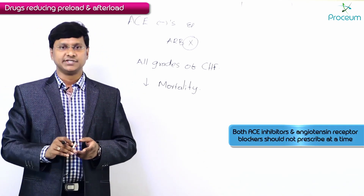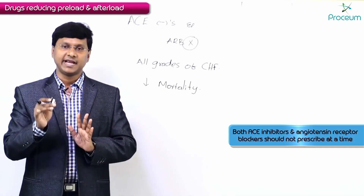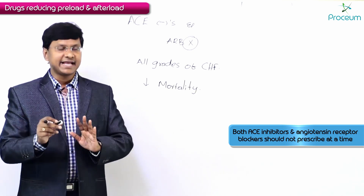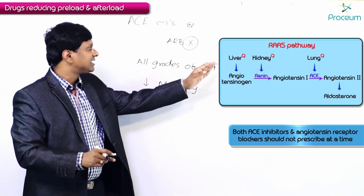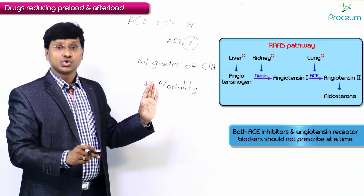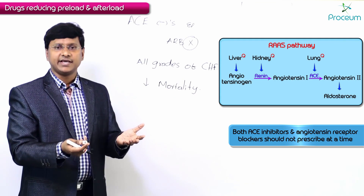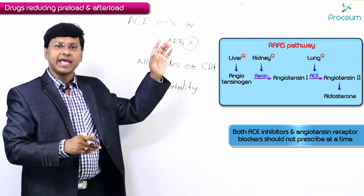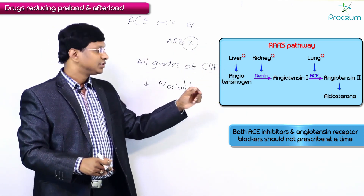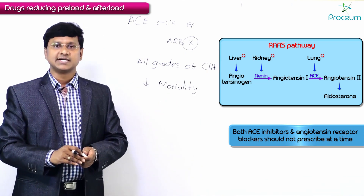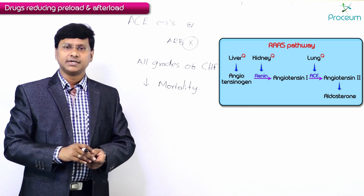Another important point: ACE inhibitors and ARBs should not be prescribed together, because both ultimately inhibit the RAS pathway. If you give both drugs, there is no added advantage. Giving either one will inhibit the RAS pathway and thereby improve mortality in patients with congestive heart failure.